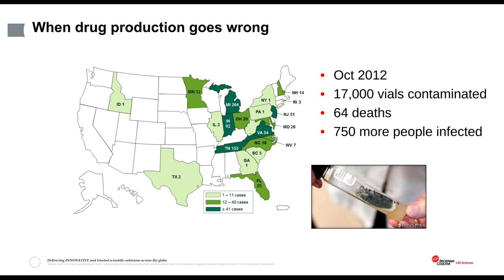Here's an example of what happens when clean room contamination control goes wrong. In 2012 in North America, a manufacturing clean room of a small compounding company became contaminated with a spore-forming fungus, which found its way into the drug product. This drug was a strong painkiller delivered via direct injection into the spinal cord. 17,000 vials were contaminated. Sadly, 64 people died from meningitis as the fungus invaded their nervous system, and 750 more were infected before the drug recall. There is no cure.